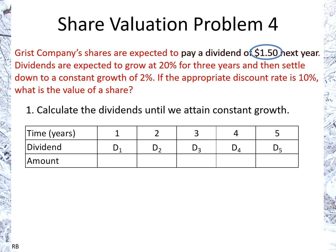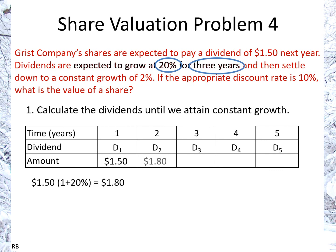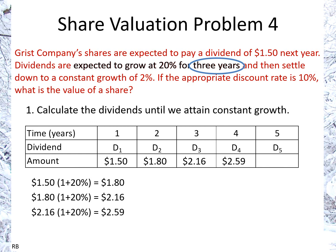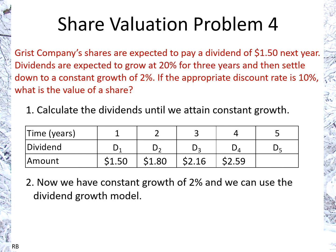We start off with $1.50 for next year, so D1 equals $1.50. It's expected to grow at 20% for 3 years. So D2 is $1.80, D3 will be $2.16, and D4 will be $2.59. Now we've reached the constant rate of 2%.